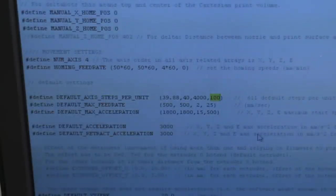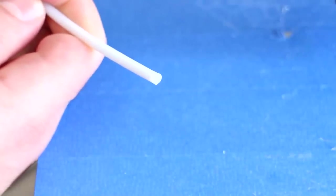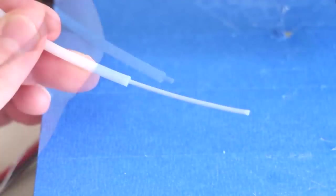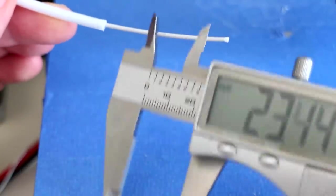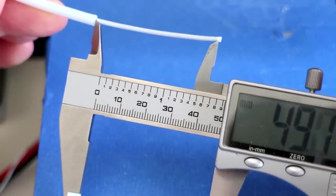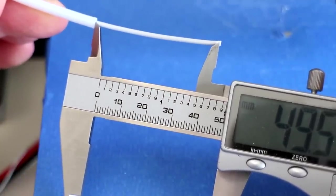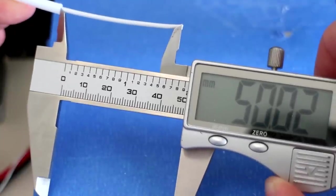Back in the firmware, replace the 100 steps with 99.4, compile and upload to the Arduino, and let's test the E-steps again. Go ahead and reverse the filament so it lines up with the end of the PTFE tube and once again extrude 50 mm. Okay, take our trusty digital calipers, measure from the cutout of the tube to the end of the filament. Look at that. Close enough. 50.02.